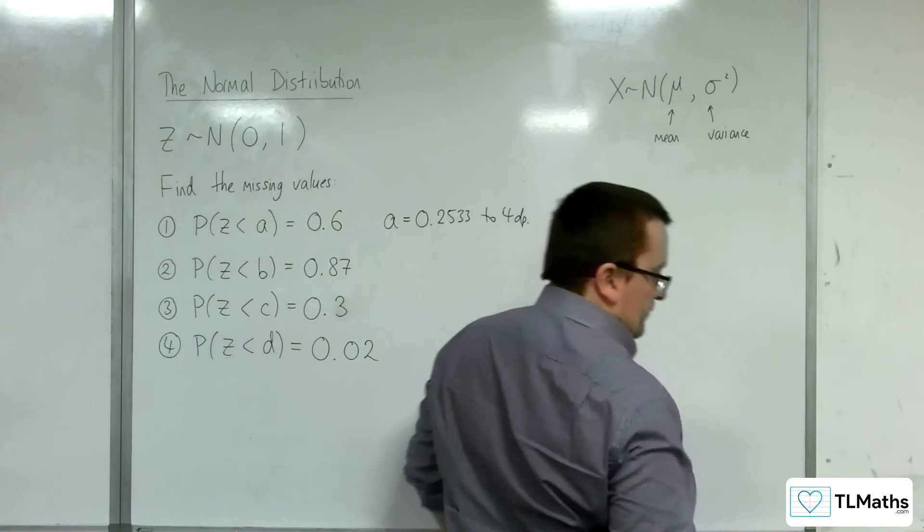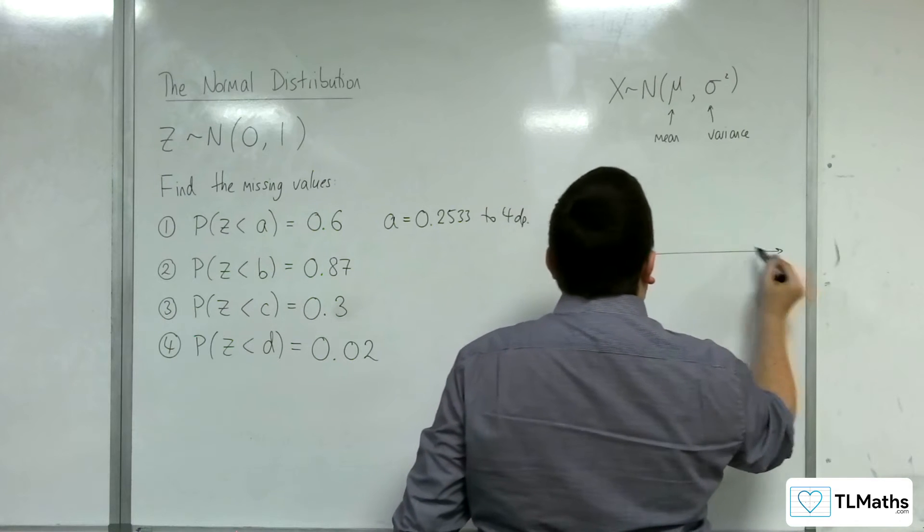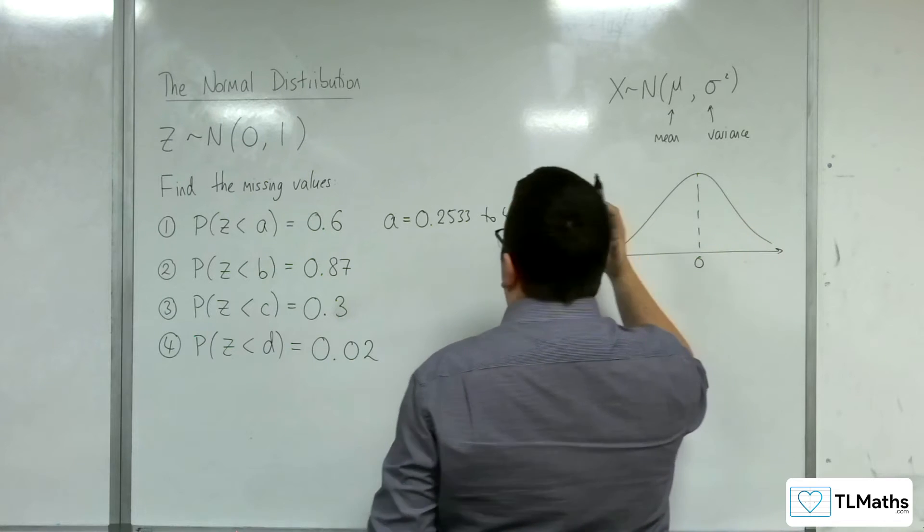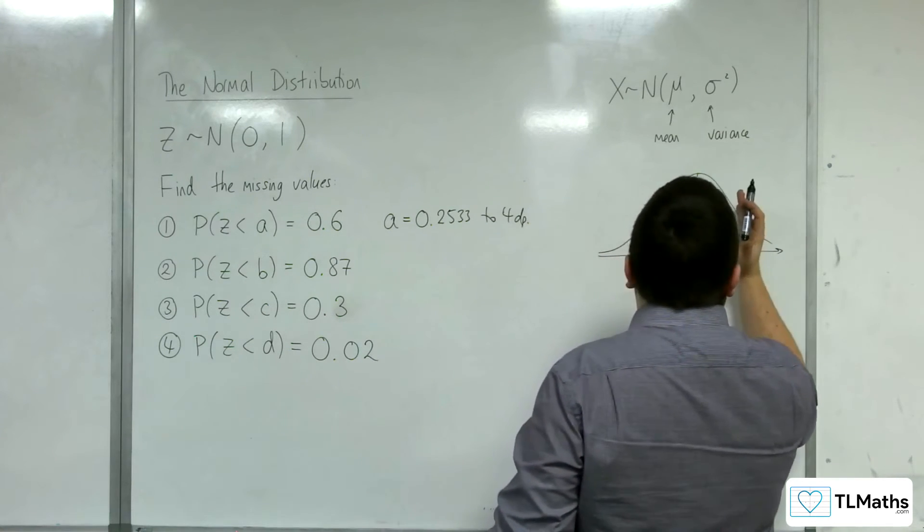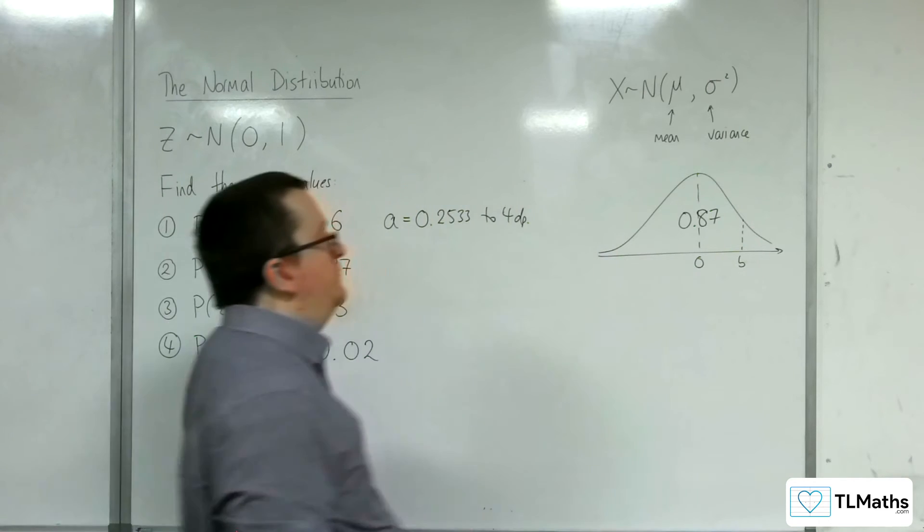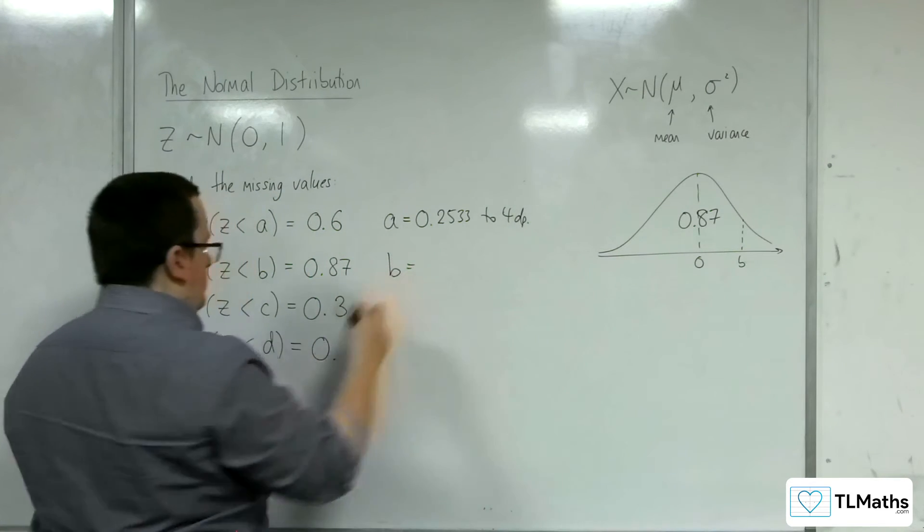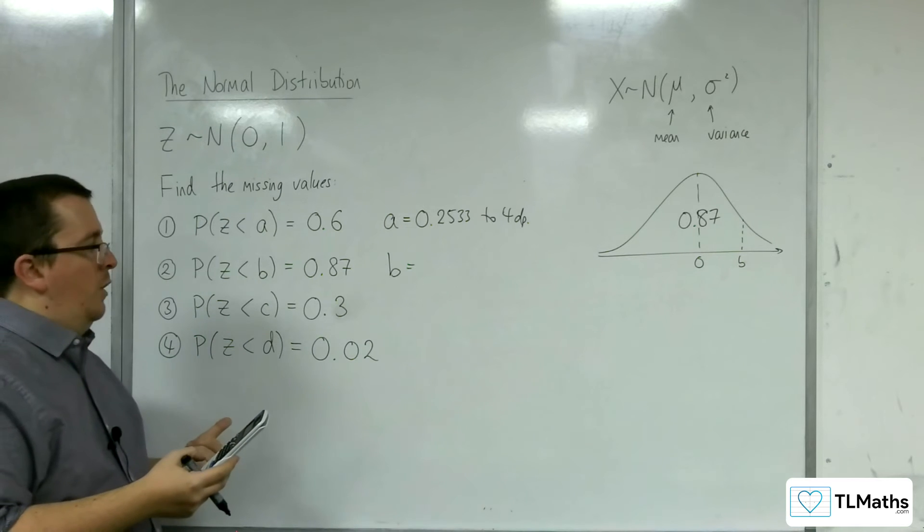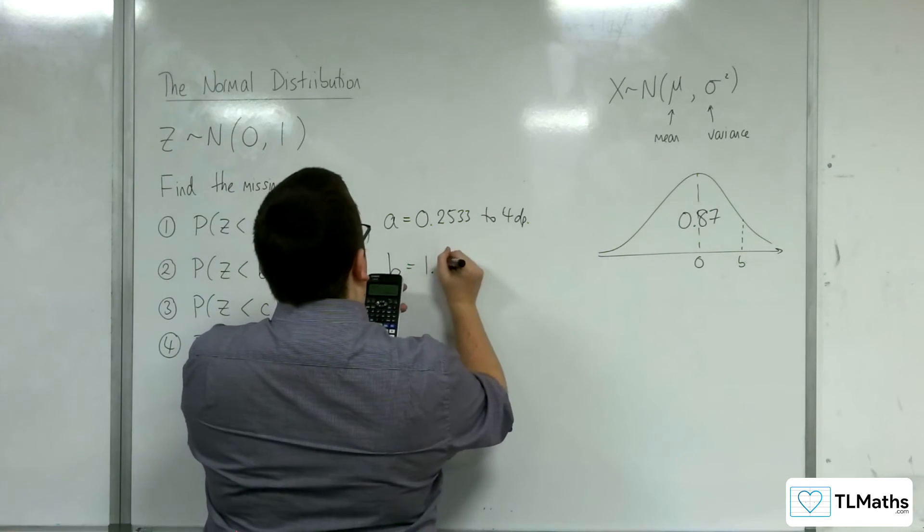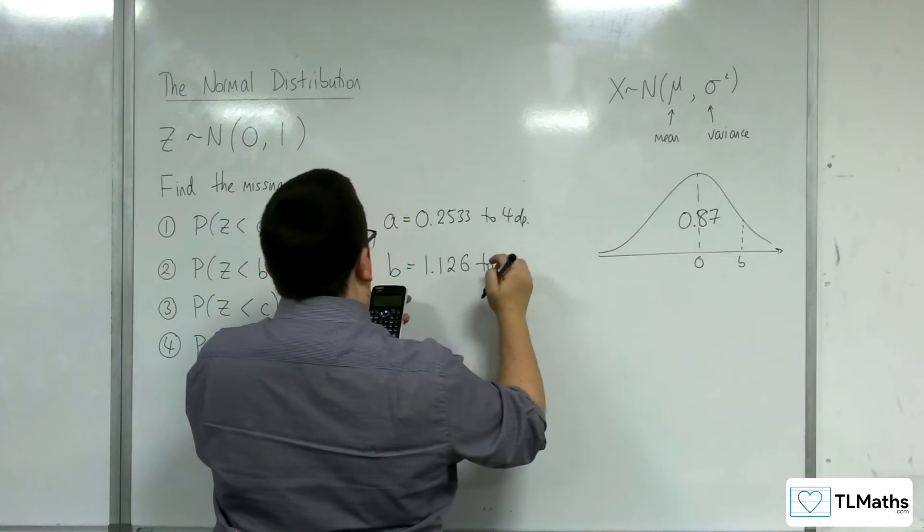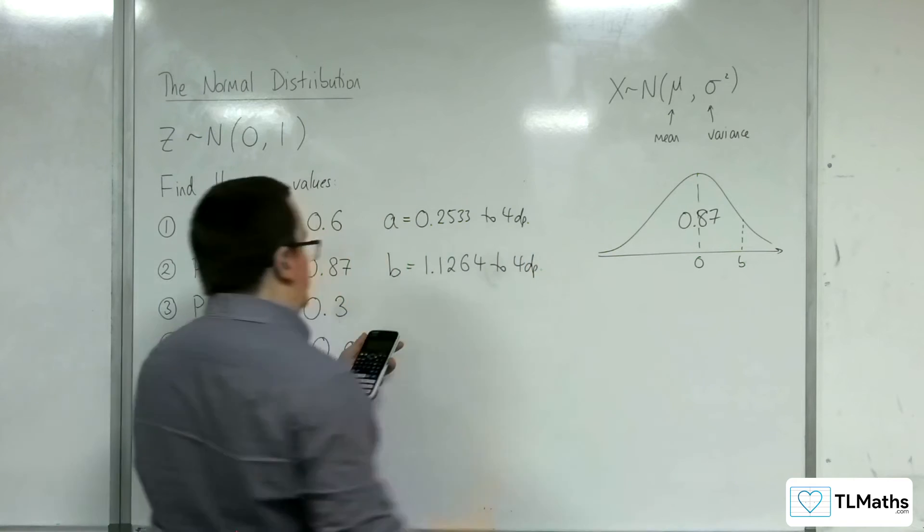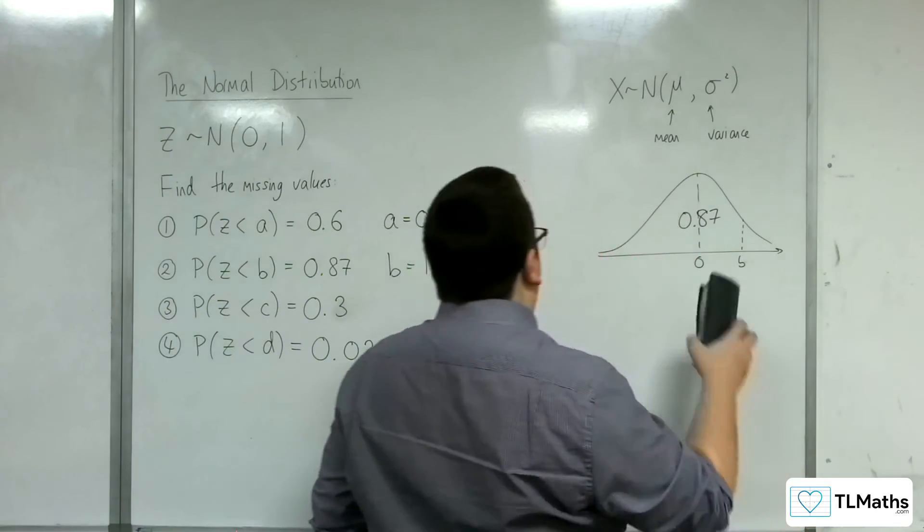For number 2, the probability of less than b is 0.87. So b would have to be somewhere over here, in order for the probability to the left to be 0.87. If I press equals, I get back to the option. Change the property now to 0.87, so the area is 0.87. Press equals, 1.126. Let's go to 4 decimal places, so 1.1264 to 4 decimal places.